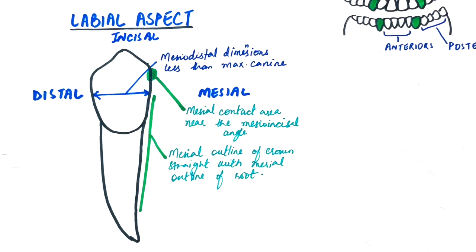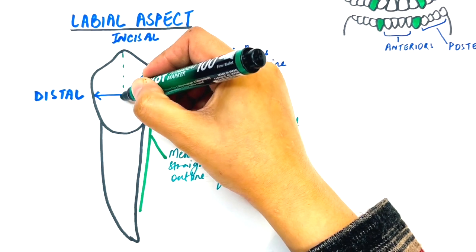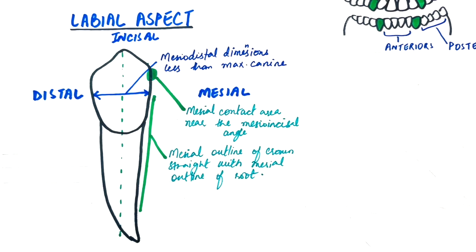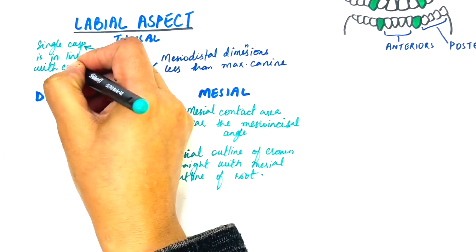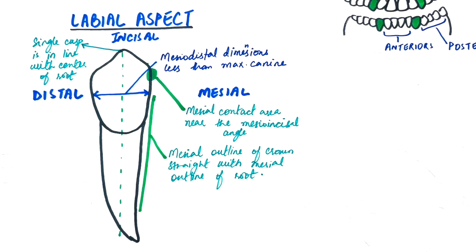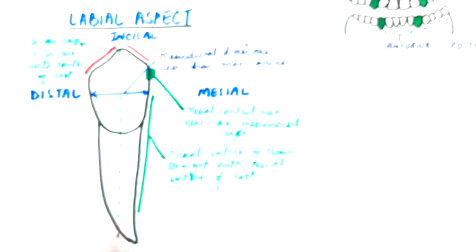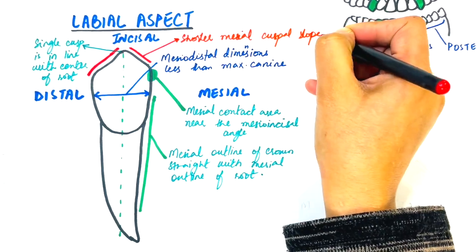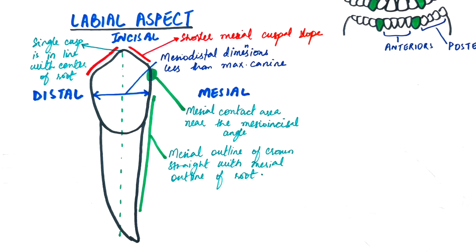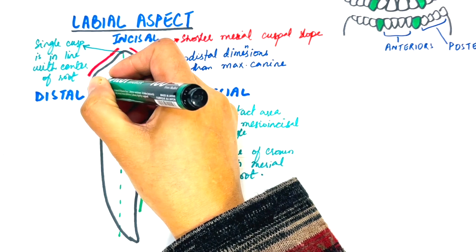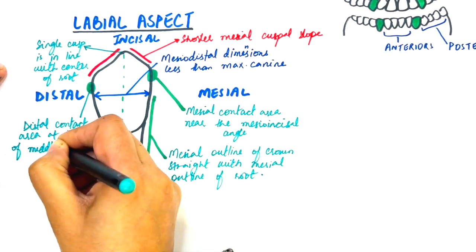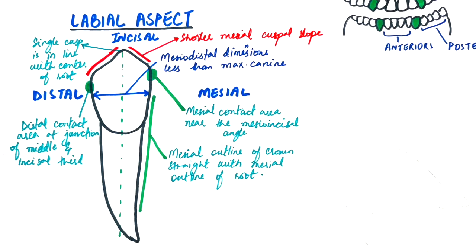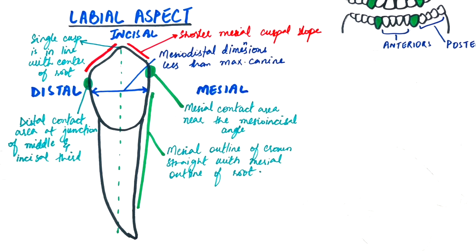The single cusp of the tooth is in line with the center of the root or the midline of the tooth. The cusp of the tooth has a mesial and a distal cuspal slopes. The mesial cuspal slope is shorter than the distal cuspal slopes of the crown. The distal contact area is located at the junction of the middle and incisal third, which in the maxillary canine is located in the middle of the middle third.